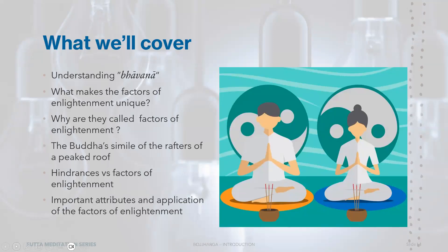In this session, we will start by reviewing our understanding of Bhavana. This is important because it helps us confirm where the Bojhangas fit when it comes to the whole spiritual path and how everything is linked and interwoven. Then we'll delve into the suttas, including the Bojhangasangyutta — chapter 46 of the Sangyutta Nikaya — examining what makes the factors of enlightenment unique, the Buddha's simile of the rafters of a peaked roof, and their important attributes and application.